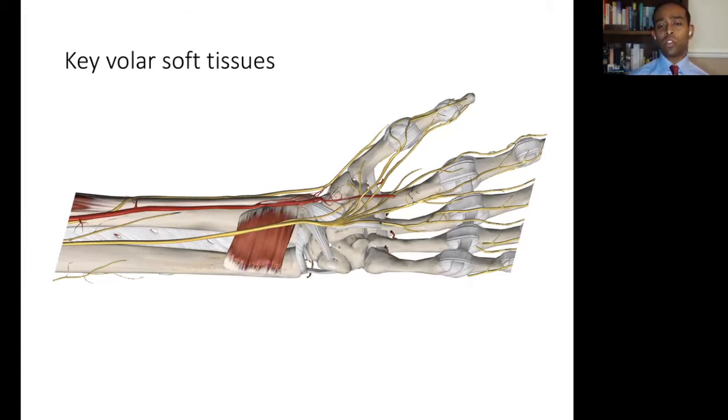Distal to this muscle, you can see the short and long radiocarpal ligaments, as well as the radioscaphocapitate ligaments. These are key radiocarpal stabilizers and originate distal to the bony watershed of the distal radius.